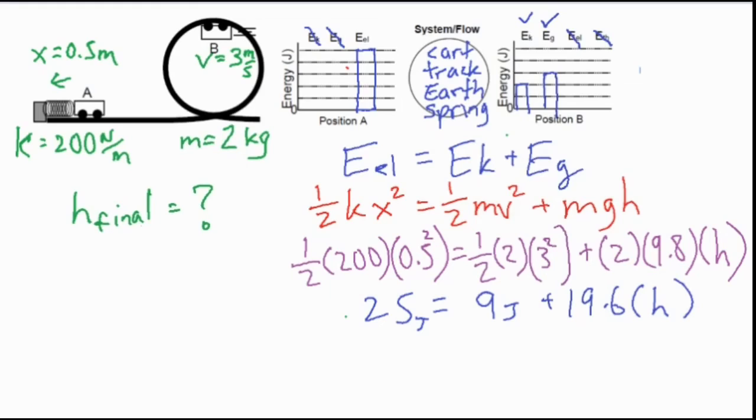Which will give us our number or coefficient in front of h. And then we go ahead and finish off by doing two final steps, which are subtracting 9 from both sides, which gives us 16 equals 19.6 times h. Divide both sides by 19.6. And then we have our final value for height, which equals 0.82 meters.